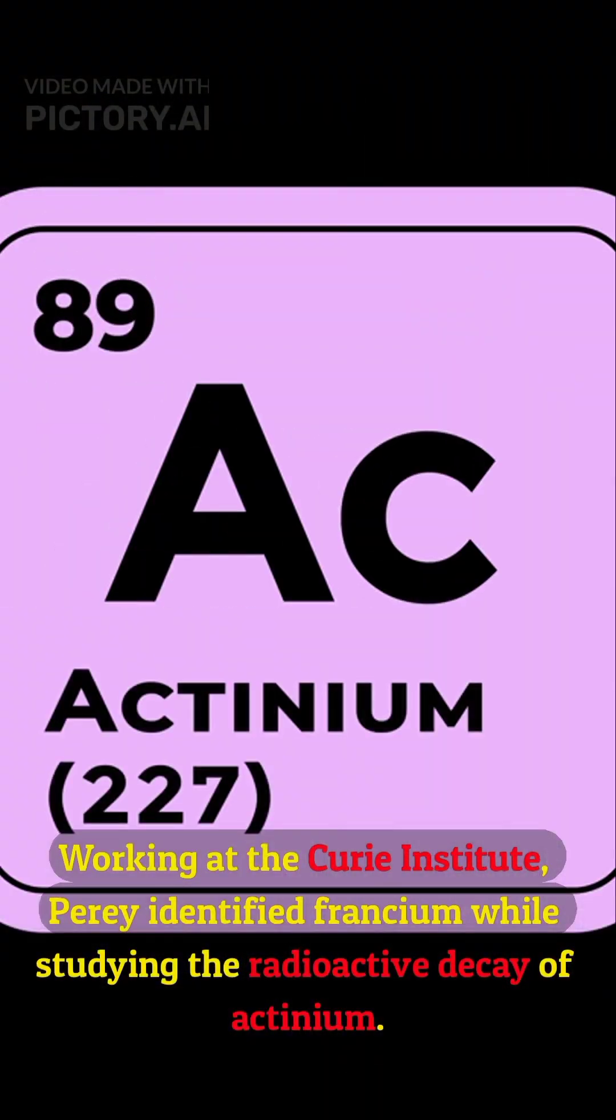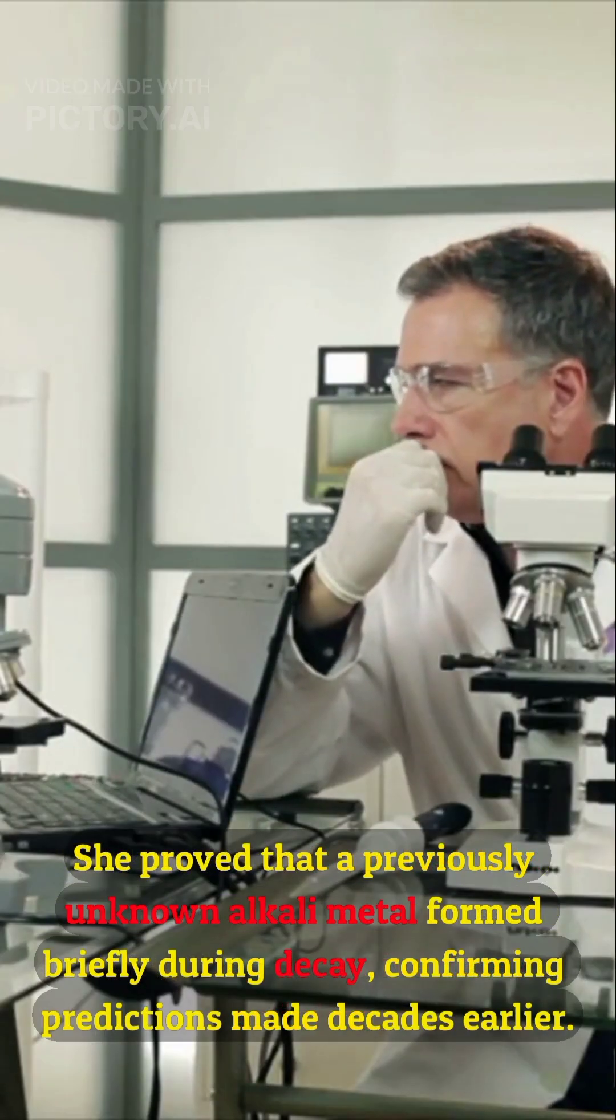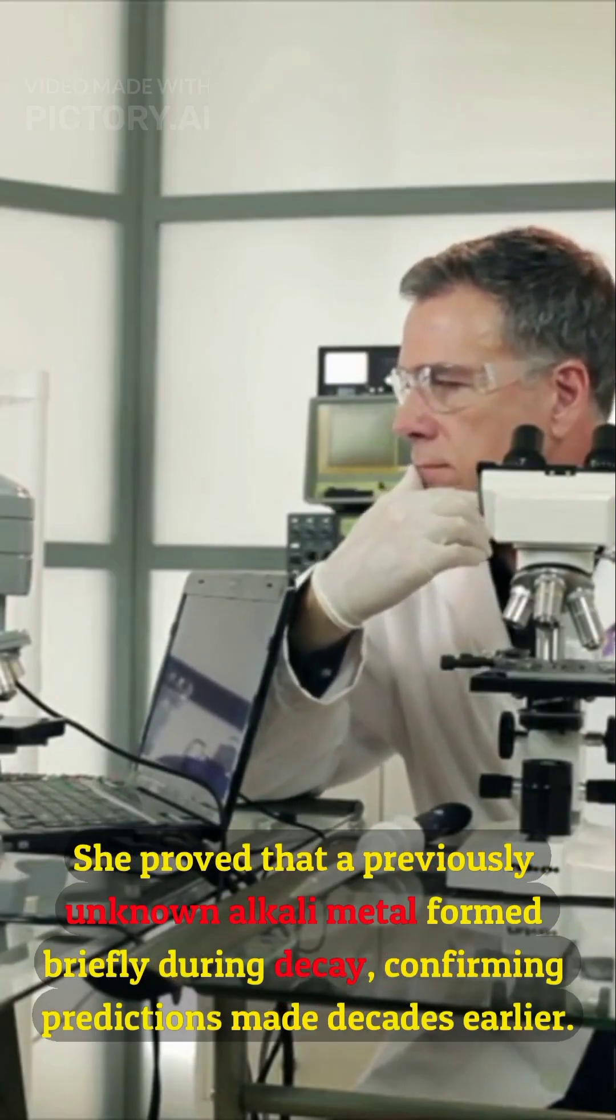Working at the Curie Institute, Puri identified francium while studying the radioactive decay of actinium. She proved that a previously unknown alkali metal formed briefly during decay, confirming predictions made decades earlier.